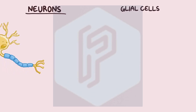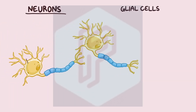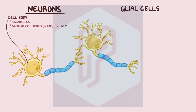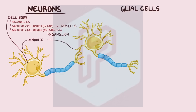The nervous system is made up of two main types of cells: neurons and glial cells. Neurons are the main cells of the nervous system. They're composed of a cell body, which contains all the cell's organelles. A group of neuron cell bodies next to each other in the central nervous system is called a nucleus, while a group outside of the central nervous system is called a ganglion. Neurons have nerve fibers — either dendrites that receive signals from other neurons, or axons that send signals along to other neurons.